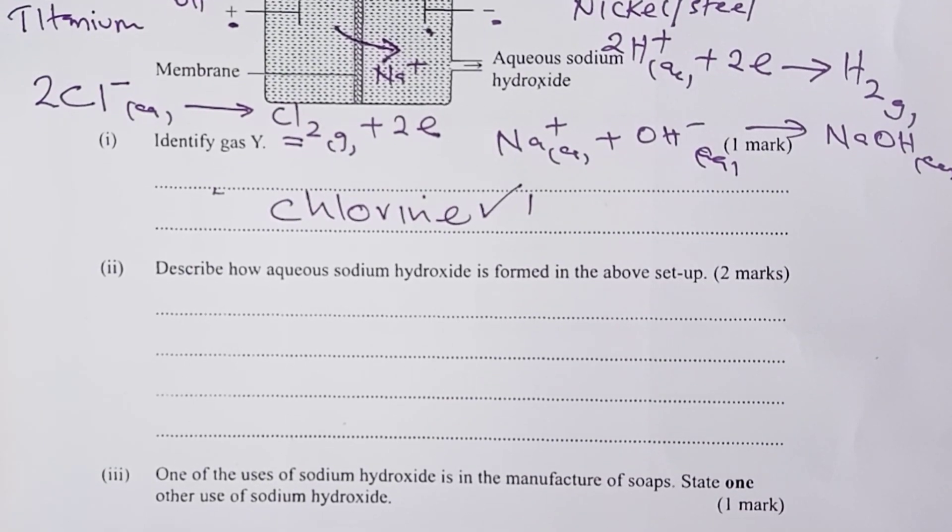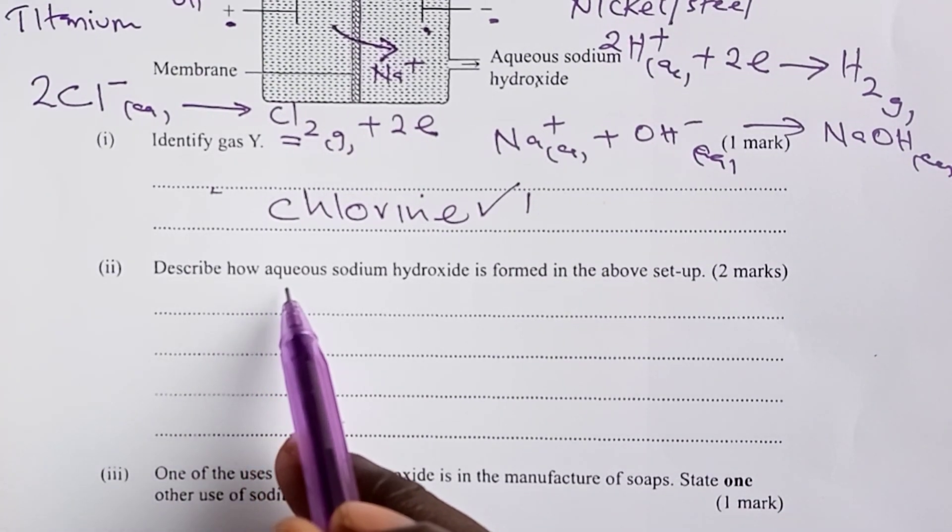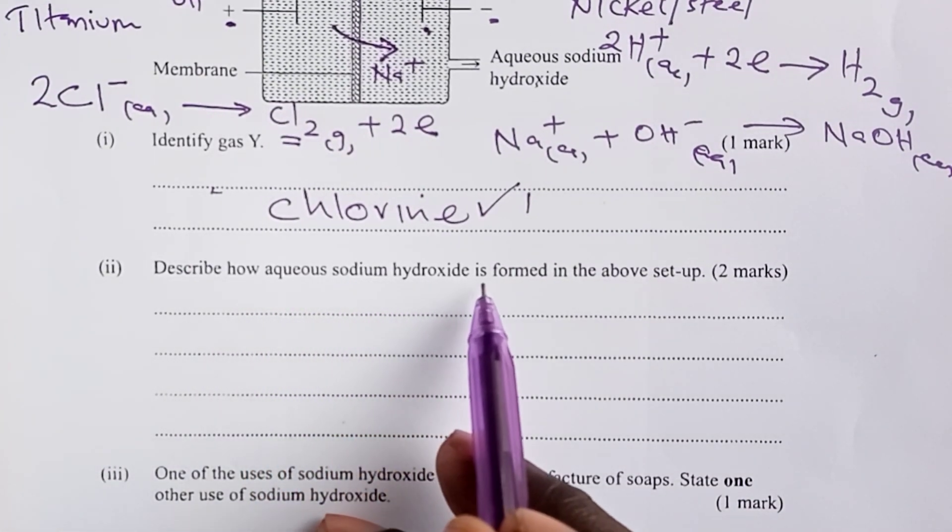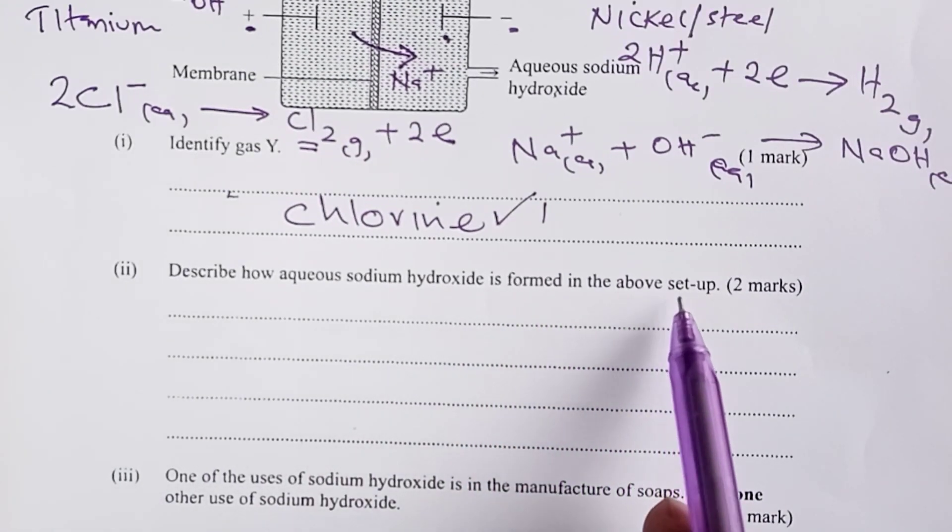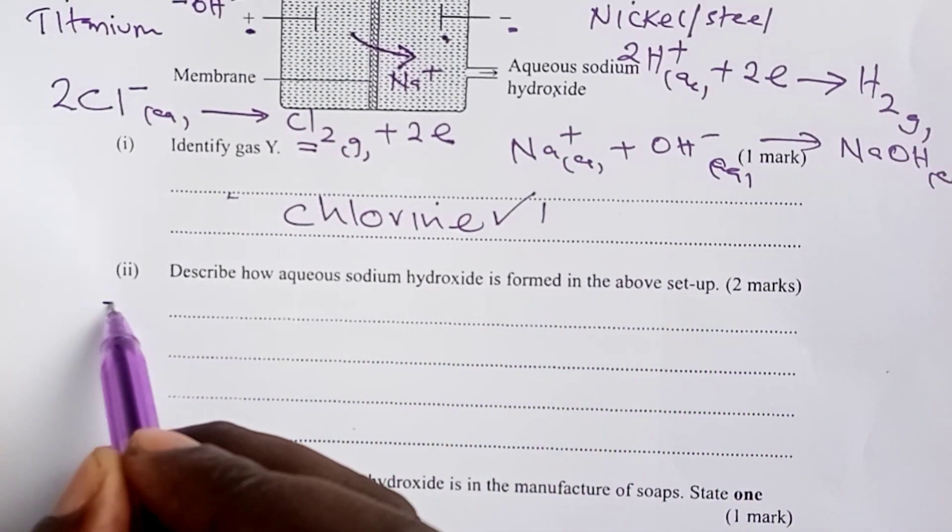Part 2. Describe how aqueous sodium hydroxide is formed in the above setup. Part 2. This is for two marks.